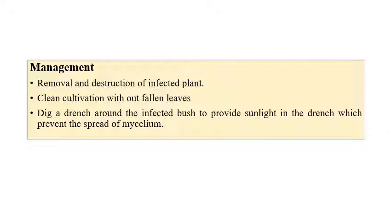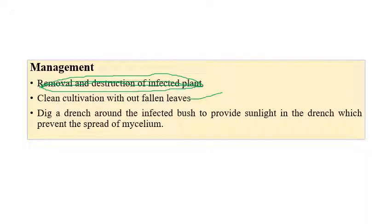Management of black root rot includes removal and destruction of infected plants, though this is difficult in large tea plantations. Clean cultivation, collection of fallen leaves, use of resistant varieties or resistant cultivars for root stock, and thinning of infected bushes to provide sufficient sunlight are important practices, as adequate sunlight prevents mycelium from growing further.